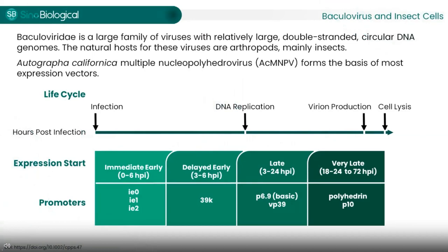Firstly, let's take a closer look at Baculovirus. Baculovirus is a large family of viruses with large double-stranded circular DNA genomes. The main hosts of these viruses are insects. The most famous virus is AcMNPV. This virus is harmless to humans, making it a suitable vector for recombinant expression. In fact, most expression vectors we use in the BEVS are engineered based on the AcMNPV genome.